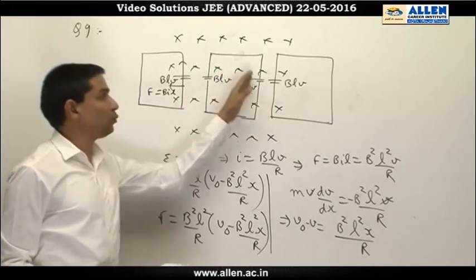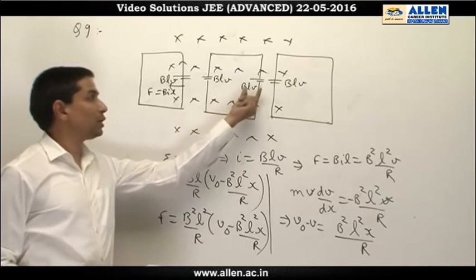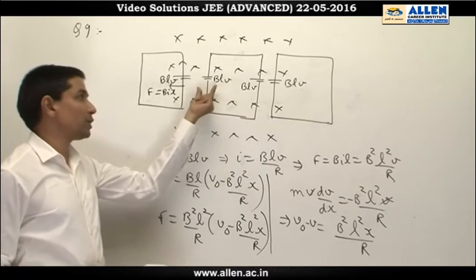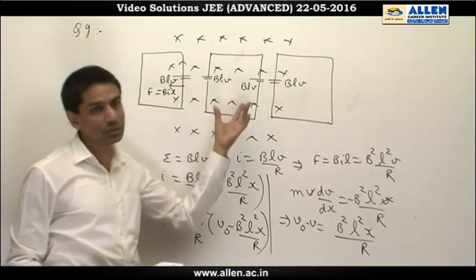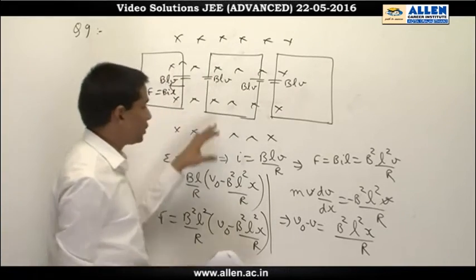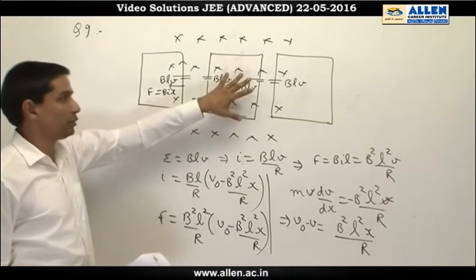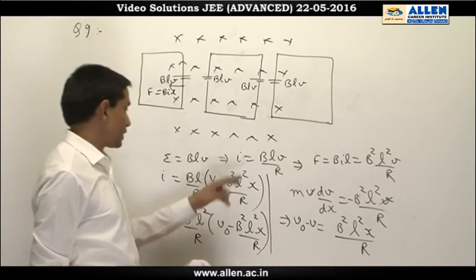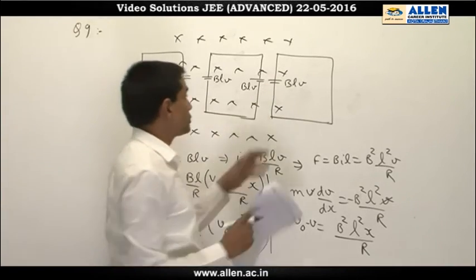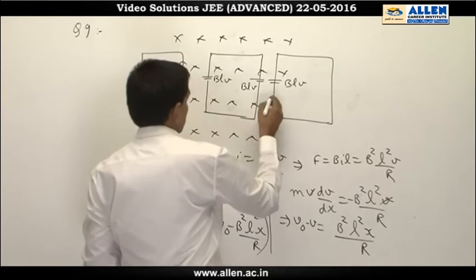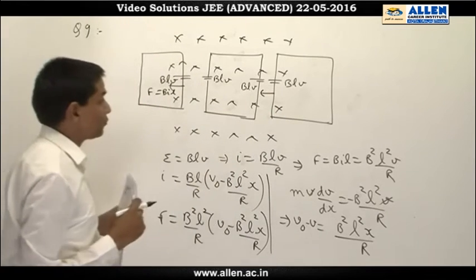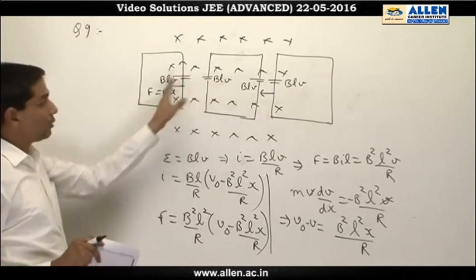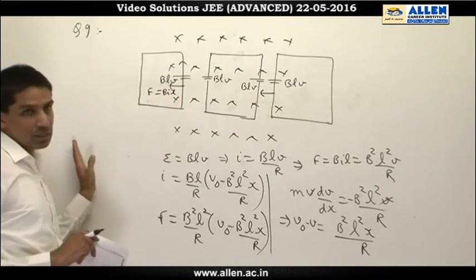When the entire loop comes into the magnetic field, this part also gets an EMF of Blv and this part also gets an EMF of Blv. The flux is constant, so we can say there is no net EMF and no current. When the loop is about to leave, the EMF is Blv again and the force is in the backward direction. The force does not change its direction — in between the force becomes zero, but the force is always in the backward direction.